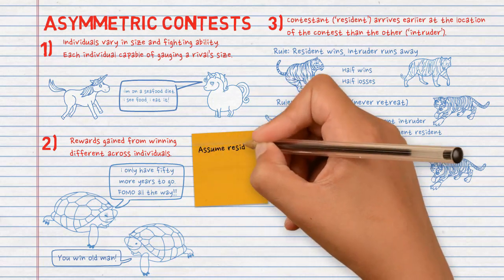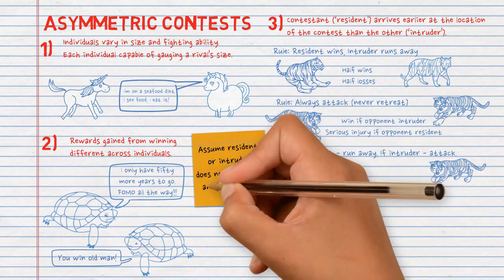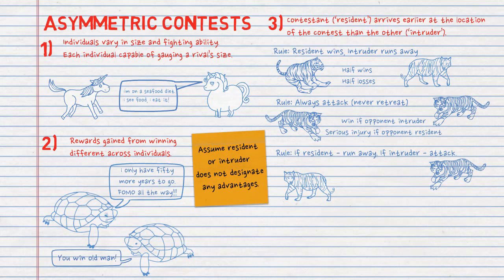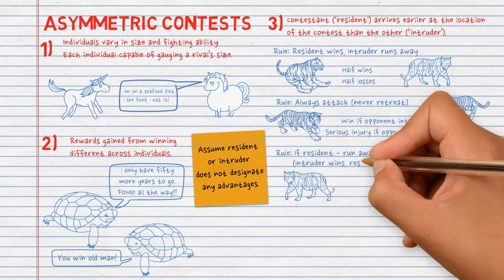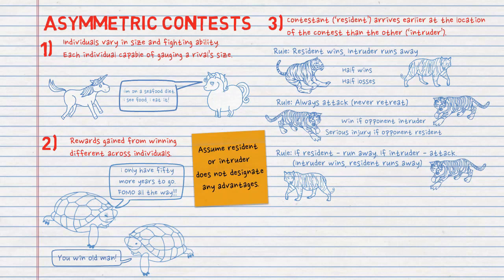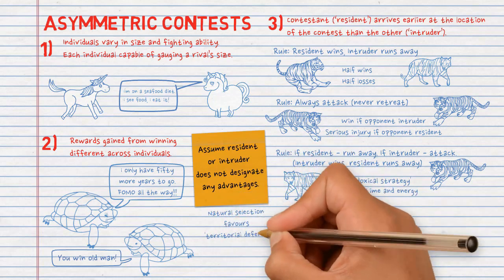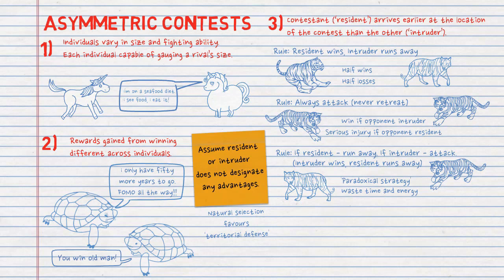We are assuming here that being a resident or intruder does not designate any advantages. However, being a resident could have advantages in knowledge of the terrain, or the intruder is more likely exhausted from moving into the battle area. Therefore, 'resident wins, intruder runs away' is more probable as a stable state in nature. The reverse strategy of 'intruder wins, resident retreats' would tend towards destruction — a paradoxical strategy — because contestants would try to avoid being the resident and hence would ceaselessly move around, expending time and energy. Therefore, natural selection would favor individuals who strove to be residents, which we know to be the behavior of territorial defense.